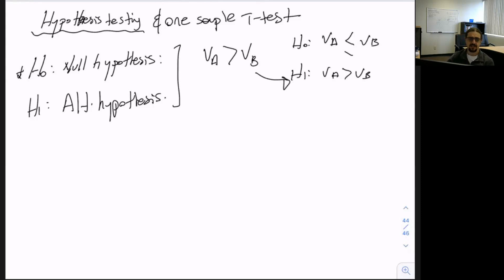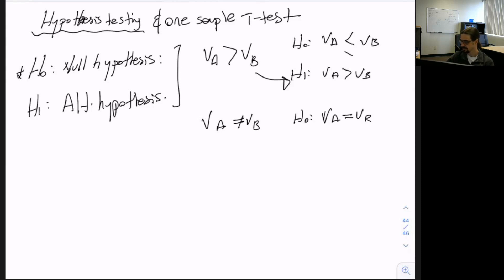If you're testing whether the speed of car A is different than car B — if vA is equal or not equal to vB — then H0 says vA is equal to vB, and the alternative hypothesis is vA is not equal to vB.